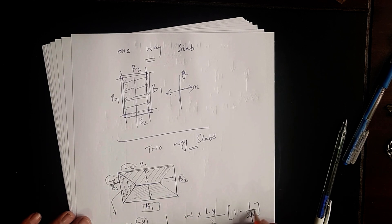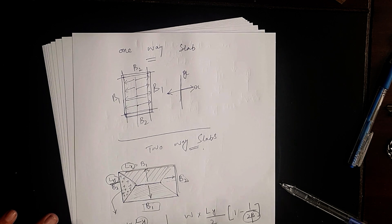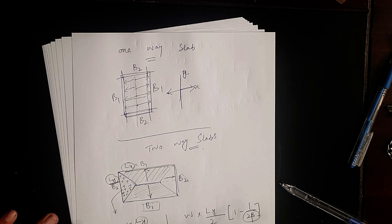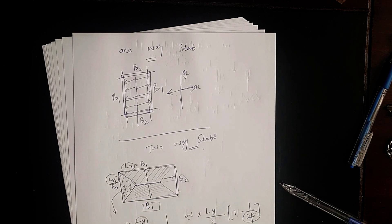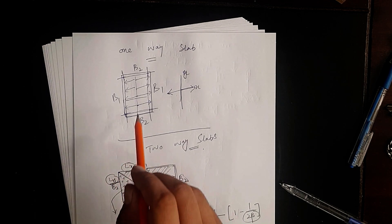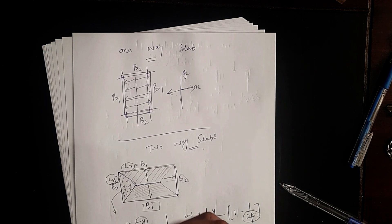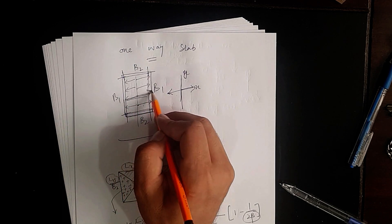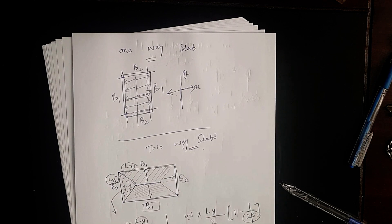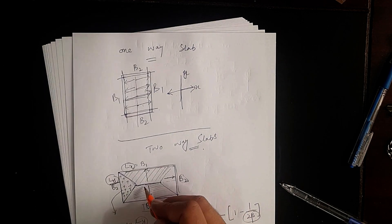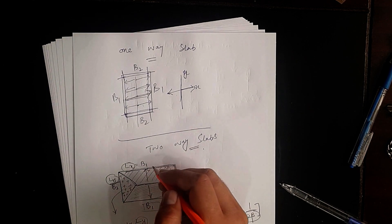Now, what is beta? Beta is the ratio of LX to LY. You calculate LX divided by LY to get beta, and substituting beta into the formula gives you the load applied over beam B1. For the constructor's point of view: in a one-way slab, most of the load is transferred to the longer beams. In a two-way slab, both the shorter direction and the longer direction must be considered, and load is transferred in both directions.